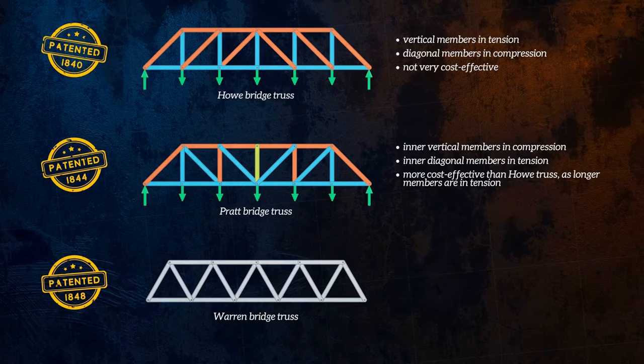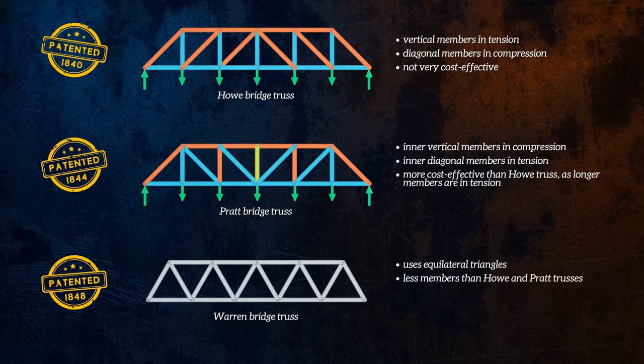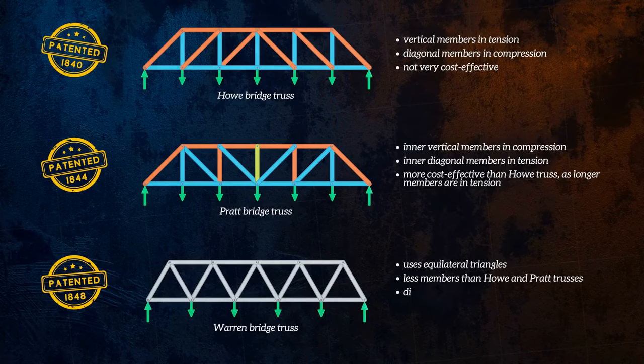The design of the Warren truss was based on equilateral triangles. The fact that all of the members are the same length is an advantage for construction, and it uses less members overall than the Howe and Pratt trusses, so it is more efficient. The diagonal members alternate between tension and compression, so it does have some quite long members in compression.